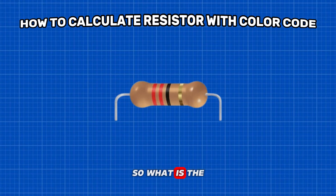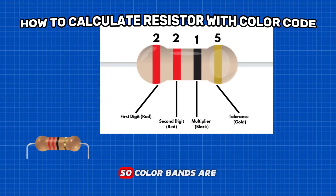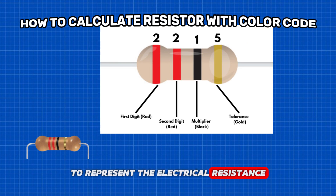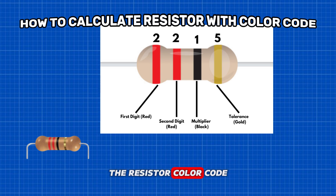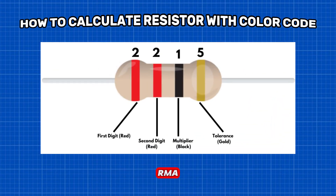So what is the resistor color code? The resistance values on tiny resistors are difficult to print, so color bands are printed on them to represent the electrical resistance. These color bands are known as resistor color codes. The resistor color code was invented in the 1920s by the Radio Manufacturers Association, RMA.